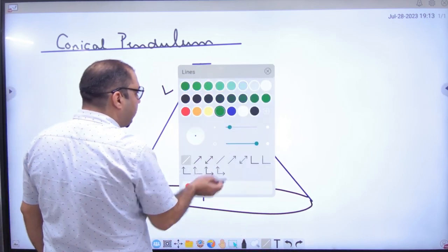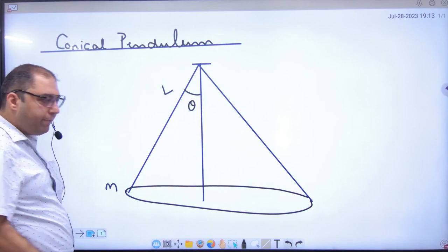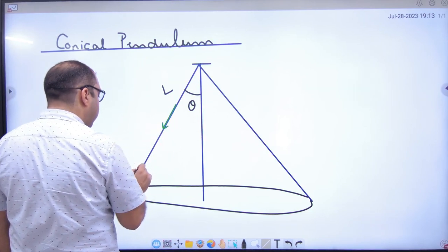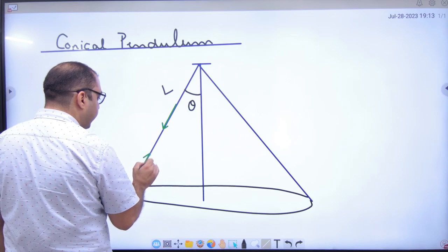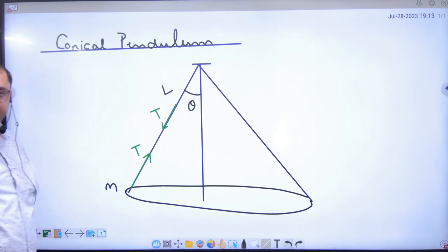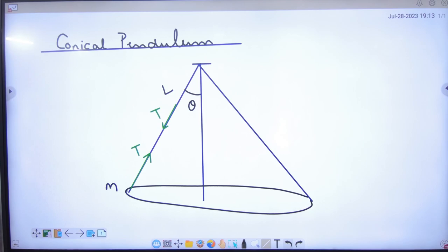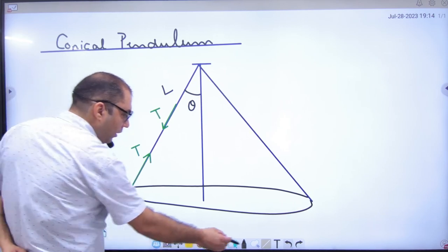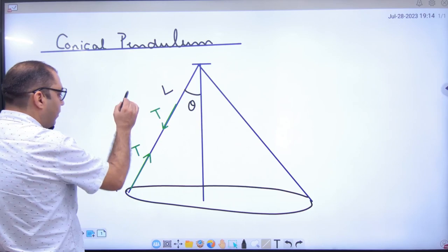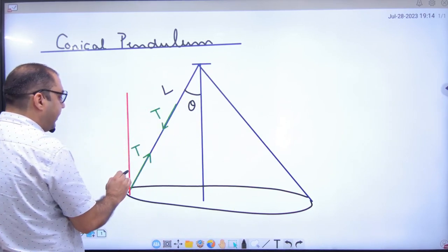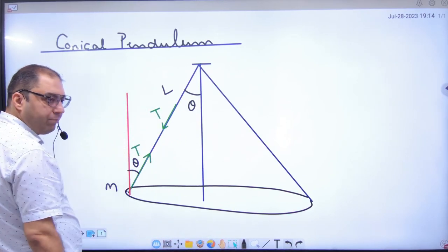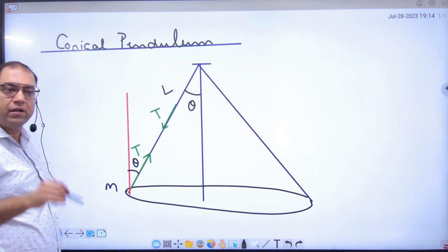Because the string is tight while rotating, what will exist in it? Tension T. This stone is circling in the circle.